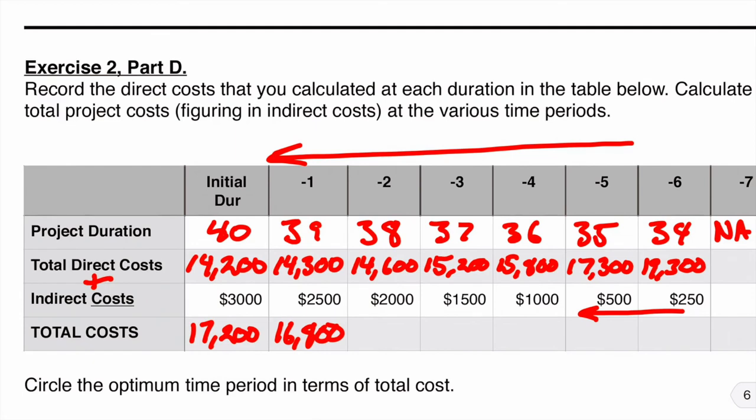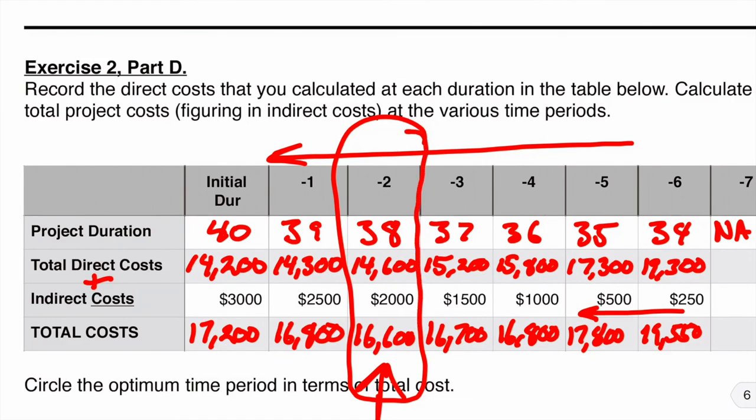So I'm going to add these all up as we go along here. Even though I've had a moderate increase in my direct costs, there's been a substantial decrease in indirect costs. So it is actually a less amount as far as the total amount. So if we look at what would be the optimum time period here, it looks like this is the least amount of cost. So we'd want to crash this by today. This way.